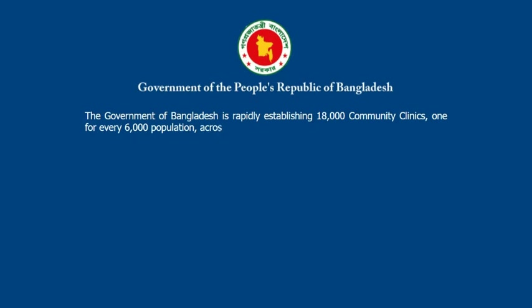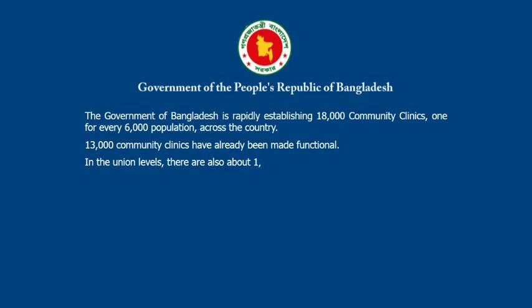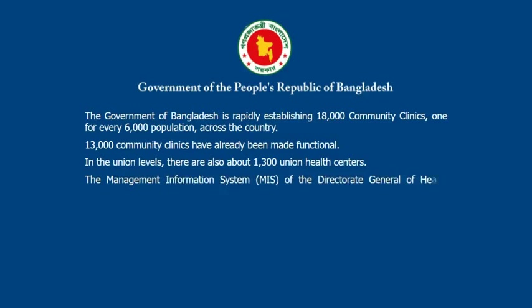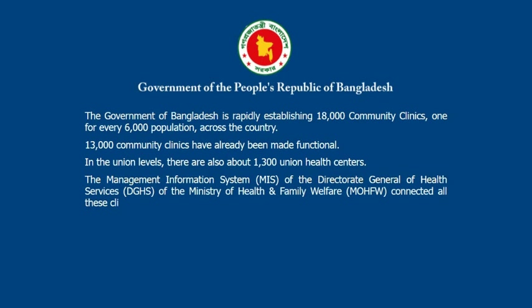The government of Bangladesh is rapidly establishing 18,000 community clinics, one for every 6,000 population across the country. 13,000 community clinics have already been made functional. In the union levels, there are also about 1,300 union health centers. The management information system of the Directorate General of Health Services of the Ministry of Health and Family Welfare connected all these clinics and health centers with internet and laptops.